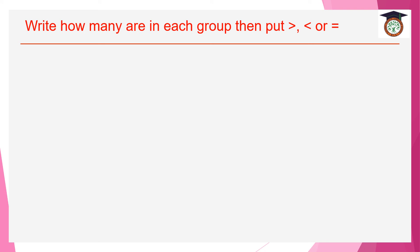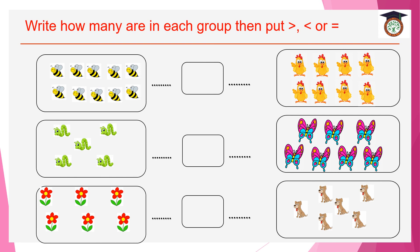Let's do this exercise together: write how many are in each group, then put smaller than, greater than, or equal to. We have 10 bees and 8 chickens — ten is greater than eight. Don't forget the sign always points towards the big number. Here we have 5 worms and 7 butterflies — five is smaller than seven. And here, 6 flowers and 6 dogs — they are equal to.